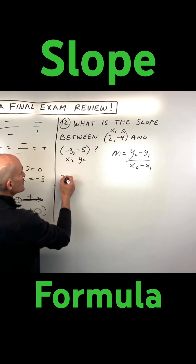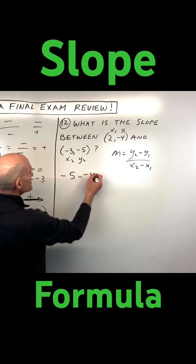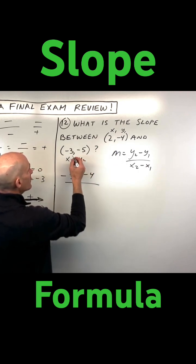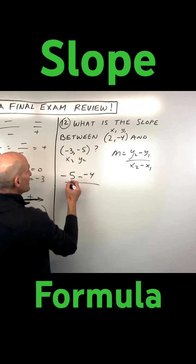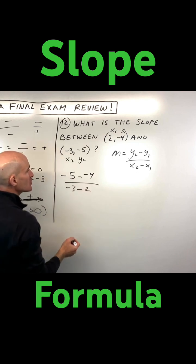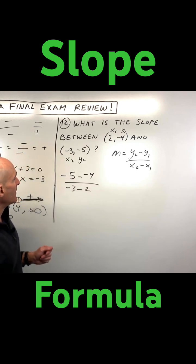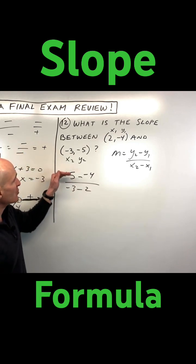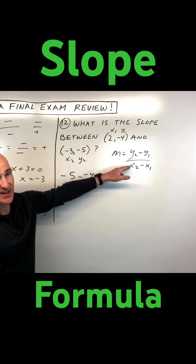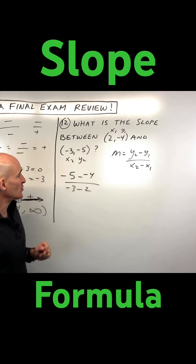So let's go ahead and do this. We have negative 5 minus negative 4, all over negative 3 minus 2. What makes this a little challenging is all the negatives. You also want to make sure you keep the y's in the numerator and the x's in the denominator — sometimes students mistakenly switch these.